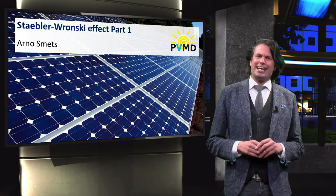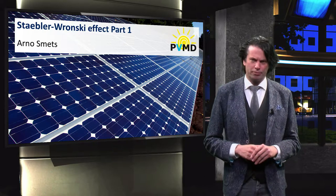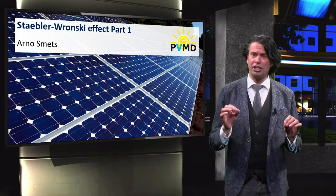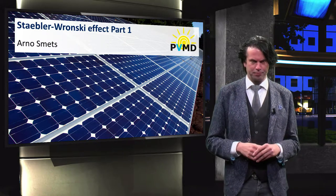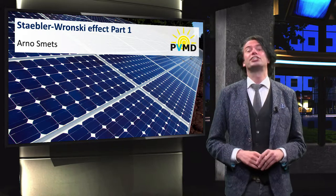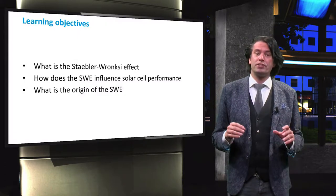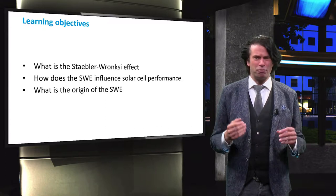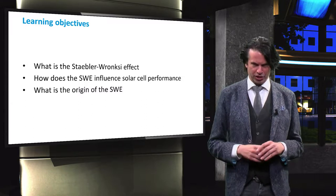We have discussed amorphous and nanocrystalline silicon as well as the various silicon alloys. In this section we will discuss the major challenges associated with using these materials in a thin film solar cell. We will start this section off with the Staebler-Wronski effect, learning what it is and how exactly it affects the performance of a solar cell, as well as looking into its origin.